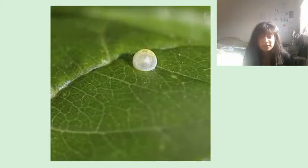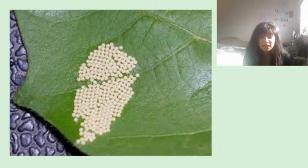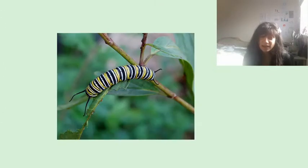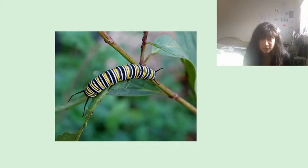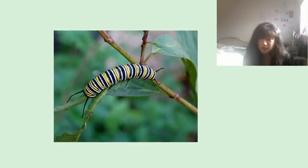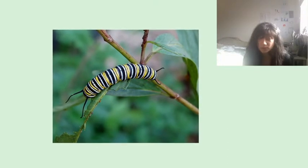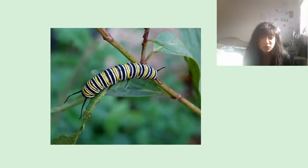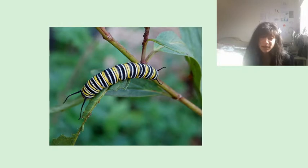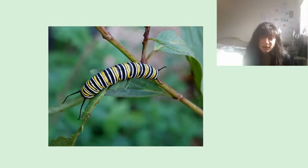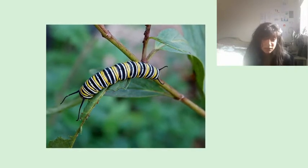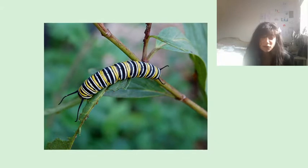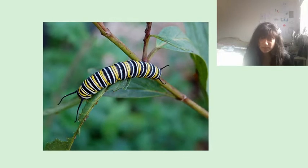Butterflies start life as larvae and tiny eggs attached to a leaf by their mothers. The egg hatches and a caterpillar emerges. The caterpillar is long like a worm but with tiny legs, and is often covered in beautiful stripes and patterns. The caterpillar spends most of its time searching for leaves to eat, and it sheds its skin a lot as it grows bigger.